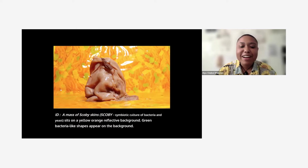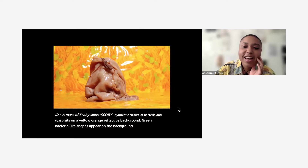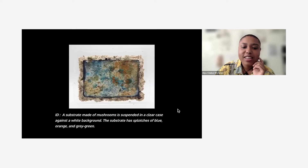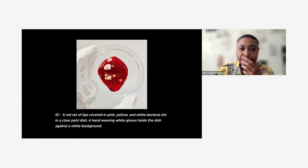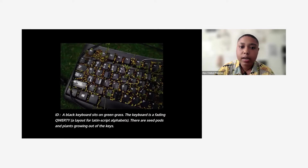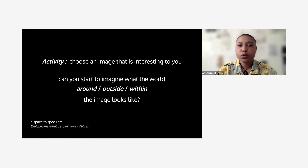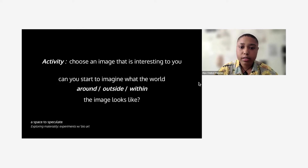I forgot to say that some of these forms look a little gross, so I'm sorry for not forewarning that. If you feel uncomfortable looking at any of this, please let me know or just take care of yourself and stop looking at the screen. This next image is a substrate made of mushrooms suspended in a clear case against a white background, with splotches in blue, orange, and green-gray. Going through all these images, I'm questioning: how can we start to imagine what these worlds could look like? If any of these images are interesting, can you imagine what the world around, outside, or within the image looks like?